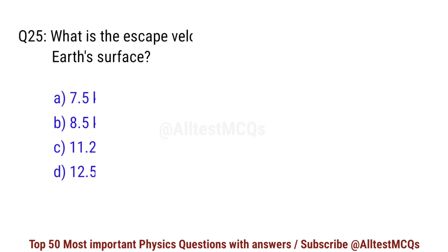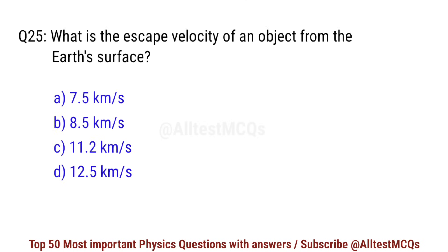Question No. 25. What is the escape velocity of an object from the Earth's surface? Correct option is C. 11.2 km per second.